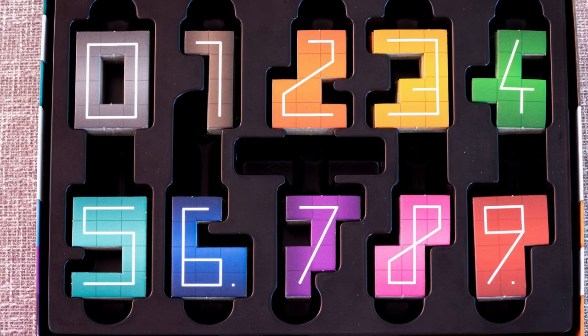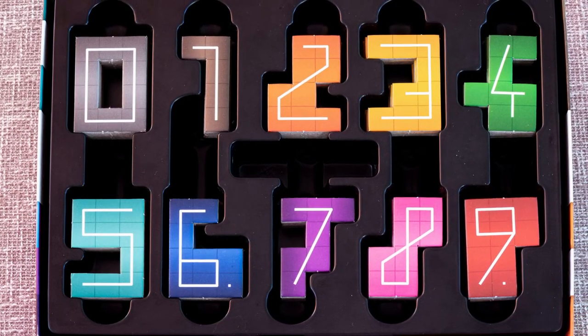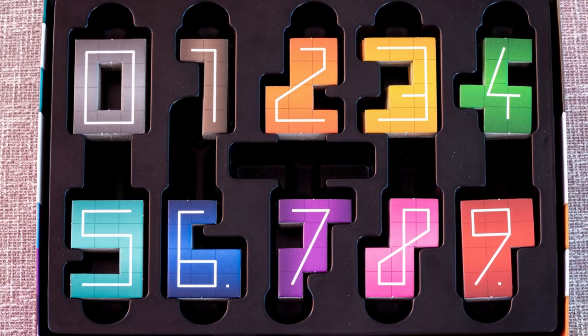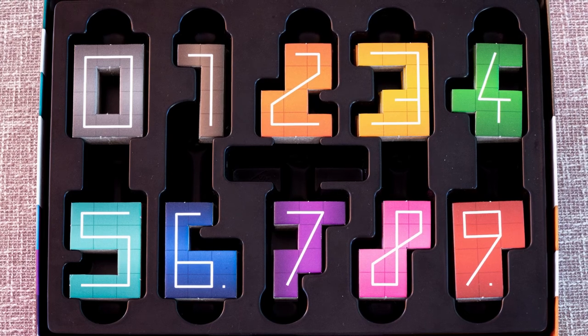The tiles are made up of numbers from zero through to nine, with each number being a different colored shape. At the start of each turn, a player reveals a card which has a number on it. Every player then takes that tile straight from the clever box insert.